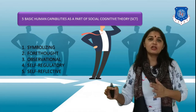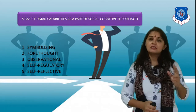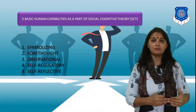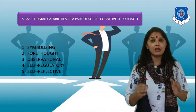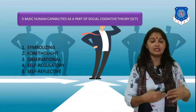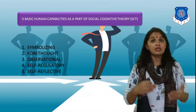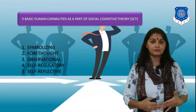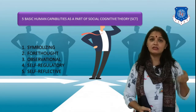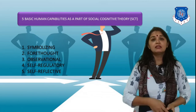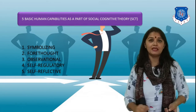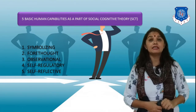The second capability is forethought, which means thinking before something. A human being actually plans before any action. Every employee, before behaving in a certain manner in an organization, will first think or analyze the situation. The employee will analyze that if he or she behaves in a certain manner, then a certain outcome is obtained, and based on this forethought, the human being will behave accordingly.